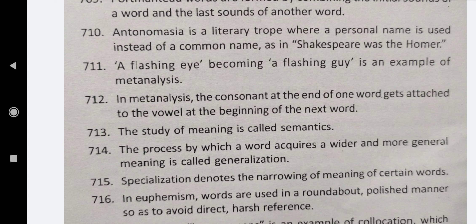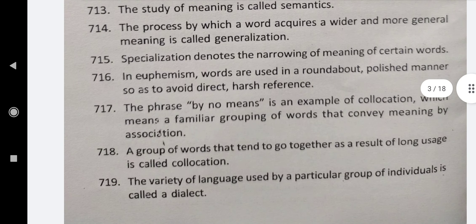The study of meaning is called semantics. The process by which a word acquires a wider and more general meaning is called generalization. Specialization denotes the narrowing of meaning of certain words. In euphemism, words are used in a roundabout, polished manner so as to avoid a direct harsh reference. The phrase 'by no means' is an example of collocation, which means a familiar grouping of words that convey meaning by association. A group of words that tend to go together as a result of long use is called collocation. The variety of language used by a particular group of individuals is called a dialect.